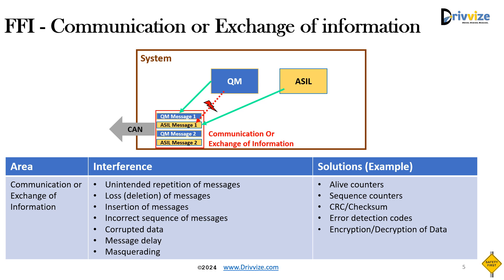Communication interference can happen due to unintended repetition of messages, loss of messages, insertion of messages, incorrect sequence of messages, corrupted data, message delay, and masquerading. To address this, we can use alive counters or sequence counters to monitor the aliveness and sequence of data, CRC or checksum or error detection codes for correctness of data, and encryption/decryption for security aspects of the data.